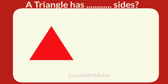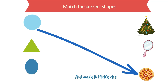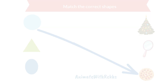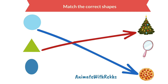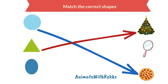A triangle has how many sides? Three sides. Yes! Next question: match the correct shape to the correct object. Ready? The first shape is circle — which object is in circle shape? Yes, pizza. Then we match it. Next, triangle — which object is in triangle shape? Yes, a Christmas tree is in triangle shape. We match it. Next, oval shape — which object is in oval shape? The mirror is in oval shape. Then we match it.